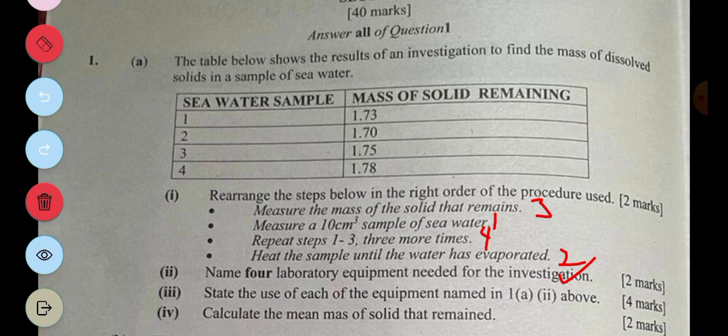And the iv is asking us to measure the mass of the solid that remained. So what you do is you add all of this and divide by the number of samples, and the number of samples are four. So when you add all of them, you are going to have 6.96. When you divide by four, you are going to have 1.74.